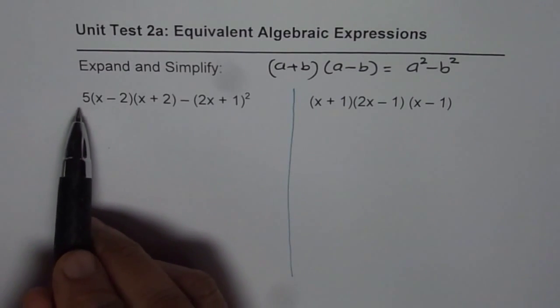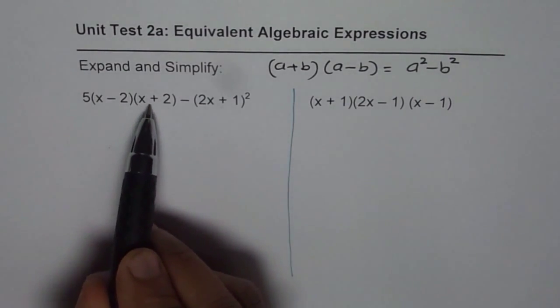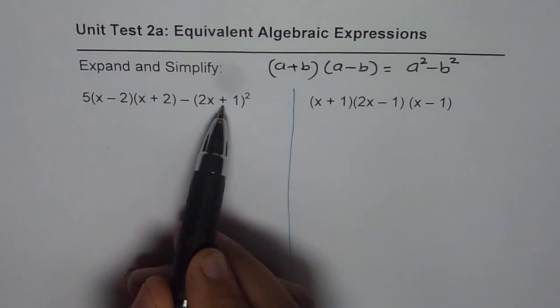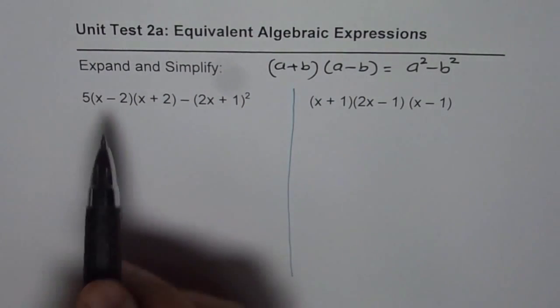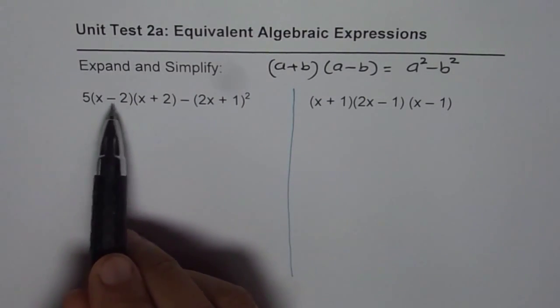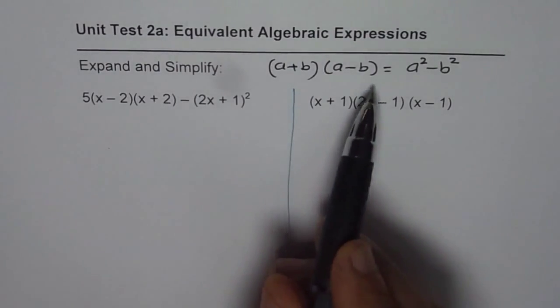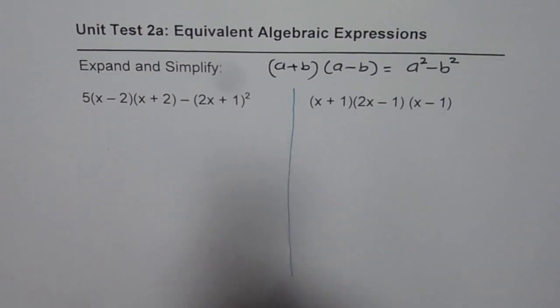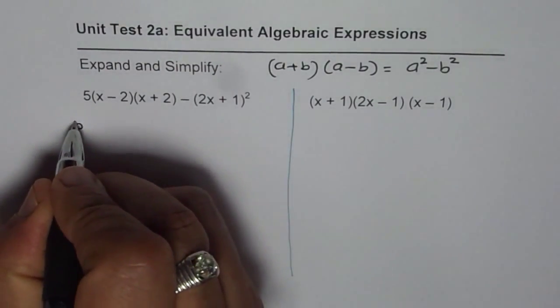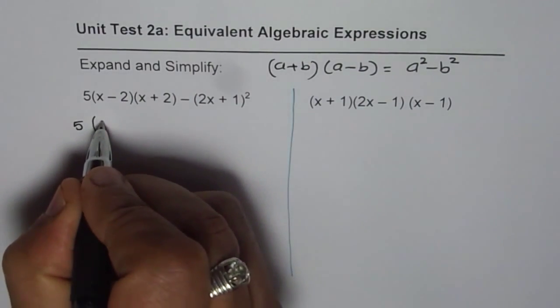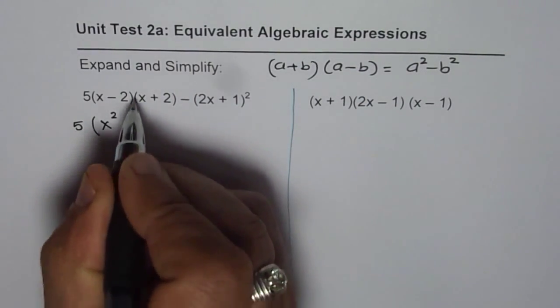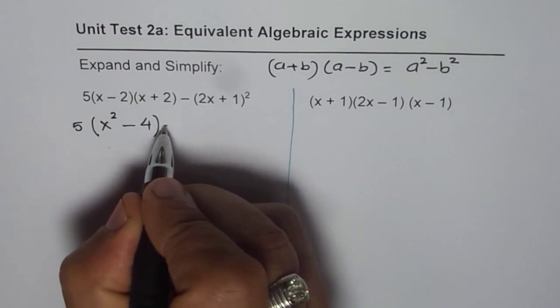So, we have 5 times (x - 2) times (x + 2) minus (2x + 1) whole squared. This is like (a - b) times (a + b). So, I can write this as a² minus b². So, I'll be expanding and then writing this as x² minus 2² is 4.